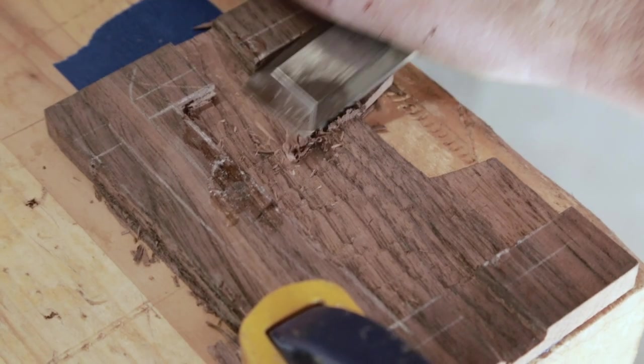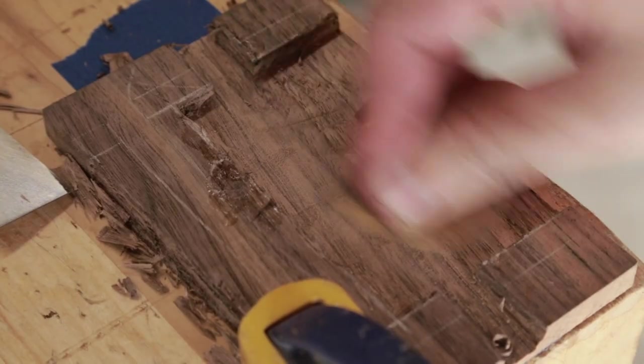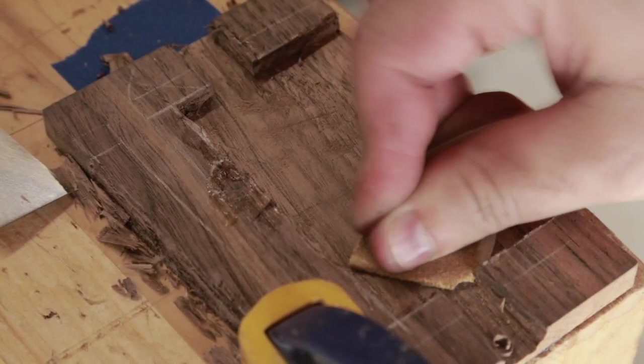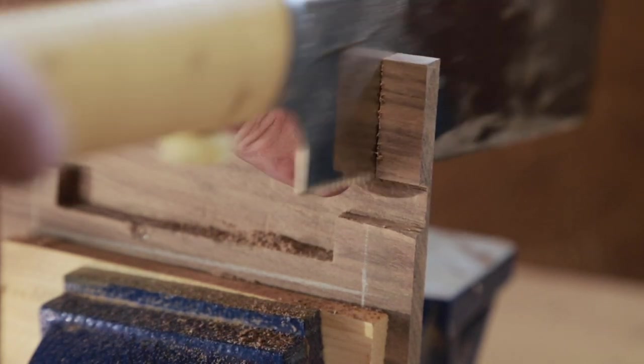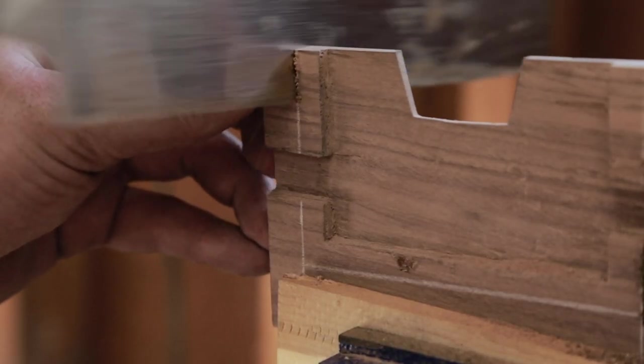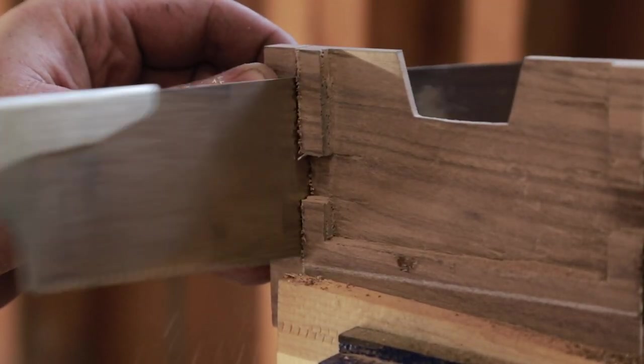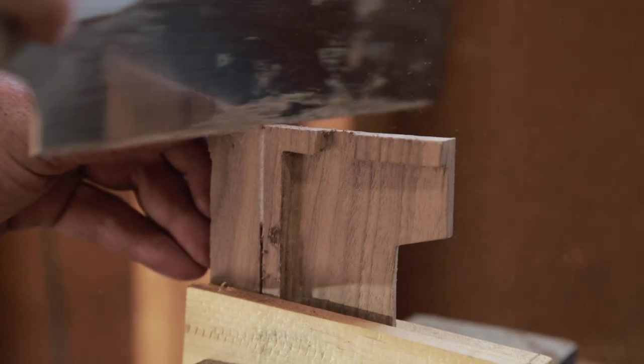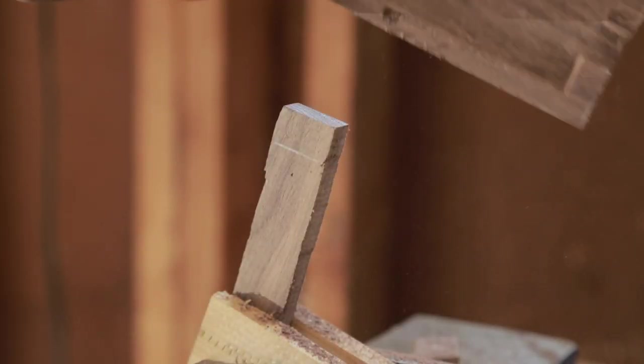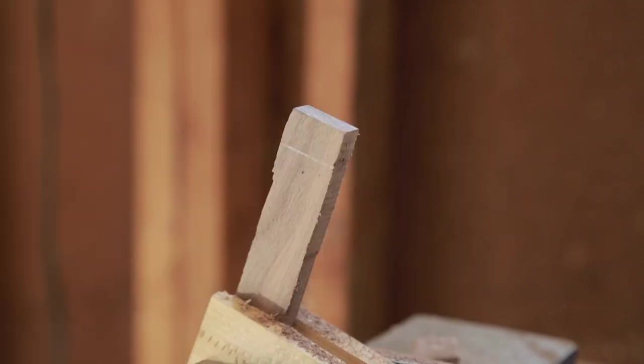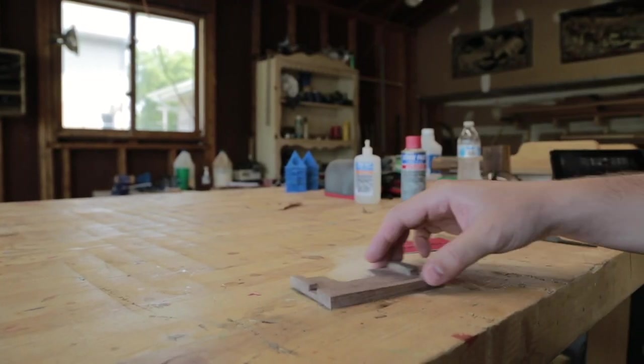Now this one looks pretty gnarly because I chipped out some and had to repair it, but with enough sanding this will clean it up. After a bunch of sanding I can trim the edges to its final size. From there I can do a final sanding and I used a file to get to the hard to reach spots.